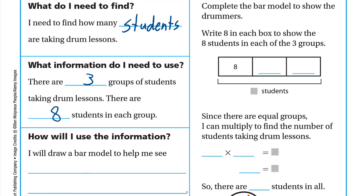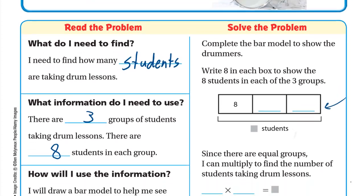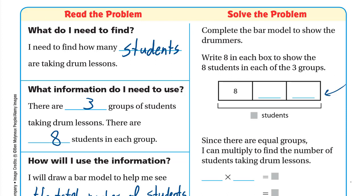I'll draw a bar model to help me see the total number of students. Let's solve the problem — complete the bar model to show the drummers. Write the number in each box to show the 80 students in each of the three groups. We have three groups, so we draw three boxes.